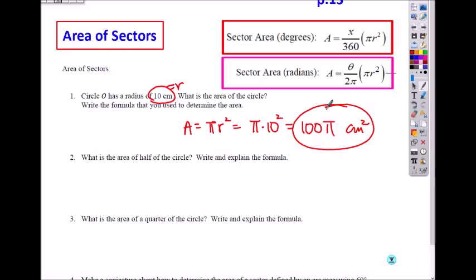What is the area of half of the circle? You divide that by 2, which is 50 pi. If we use a formula, what do we do? Half of the circle means what?